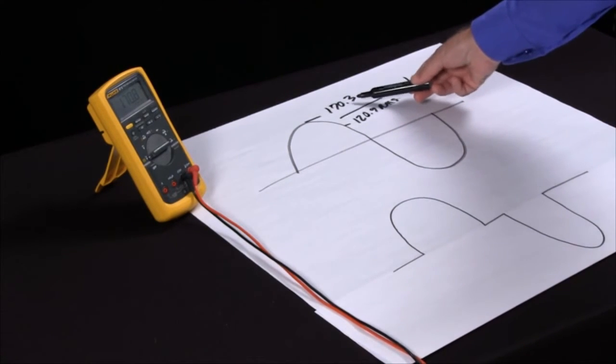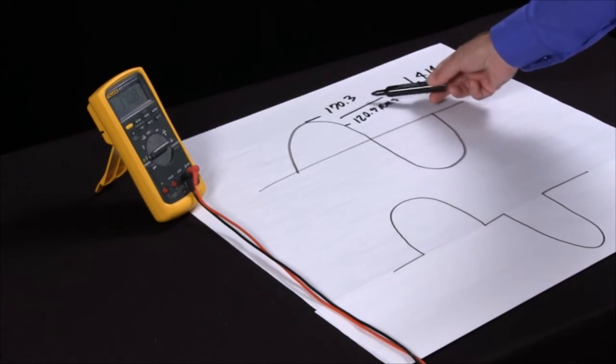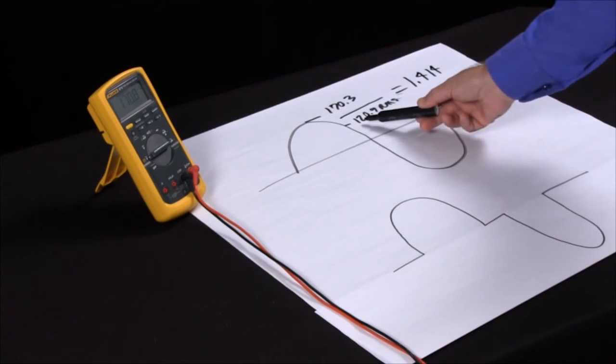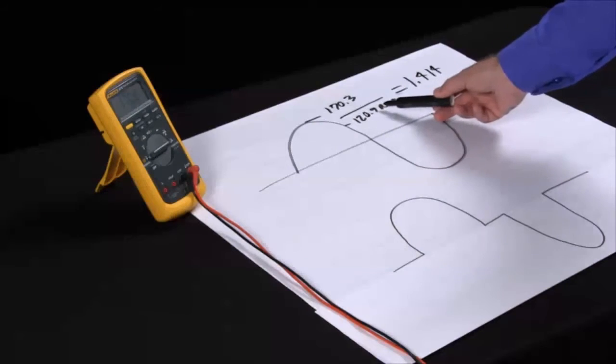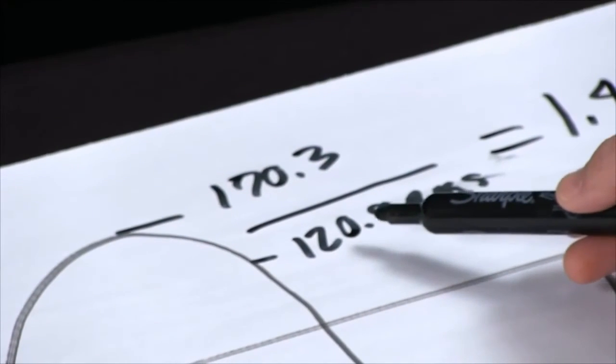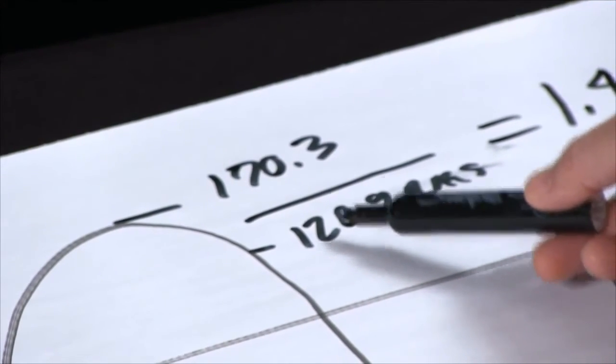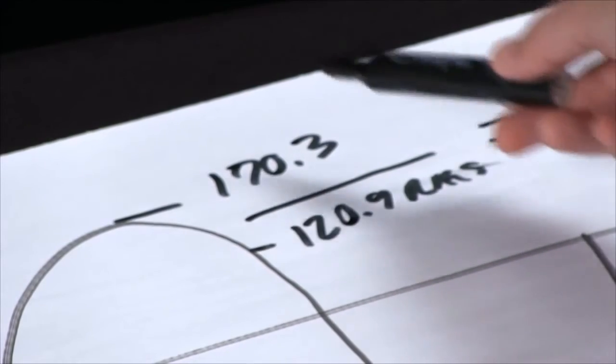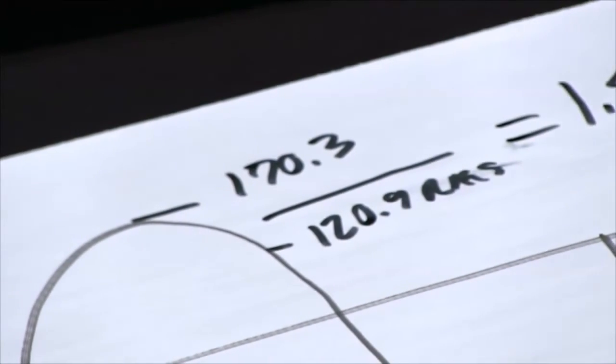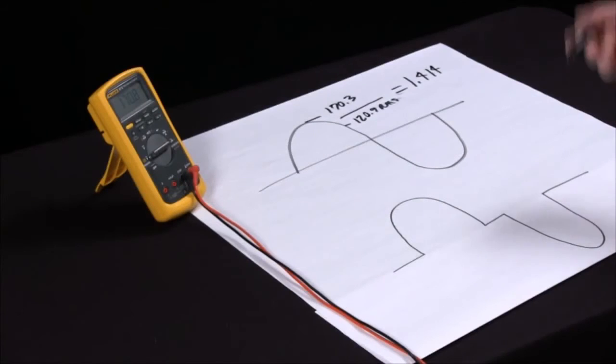Typically what we're looking for is a ratio of one and a half. So if you simply take the RMS measurement of 120, divide it by two, which gives us 60, add 60, we should have something in the range of 170 to 180 as far as our crest factor.